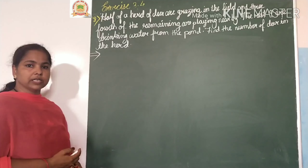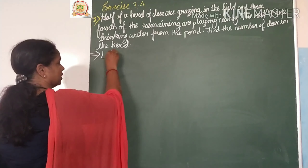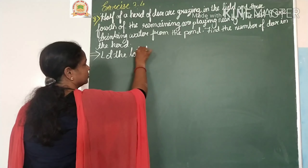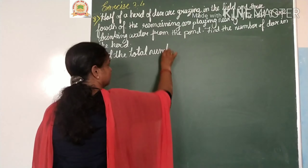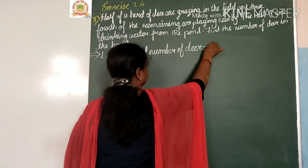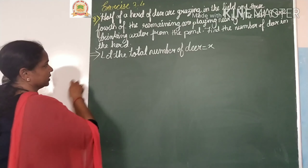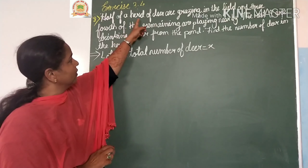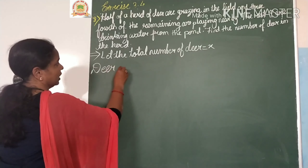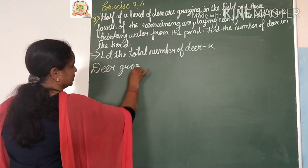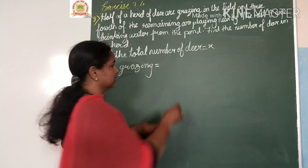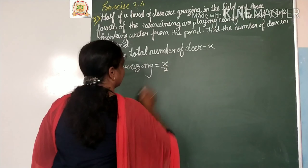So children, first we have to consider: let the total number of deer be equal to x. Half of the herd are grazing, so deer grazing is equal to half of the total number, which means x by 2 are grazing.